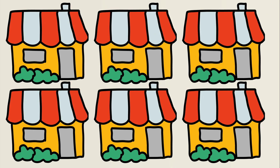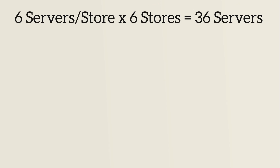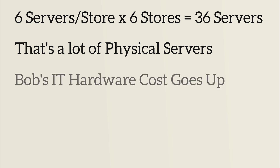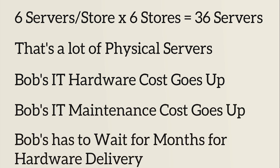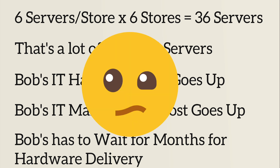But that adds to the cost. Five years later, Bob has six stores. He needs six servers per store times six stores — that's 36 servers. That's a lot of physical servers. Bob's IT hardware cost goes up, his maintenance cost goes up, and Bob has to wait for months for hardware delivery. And that is making Bob very unhappy.